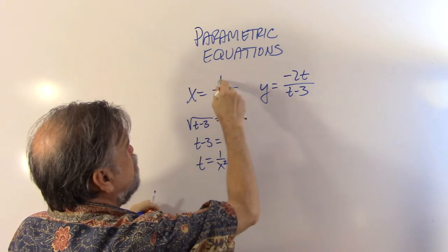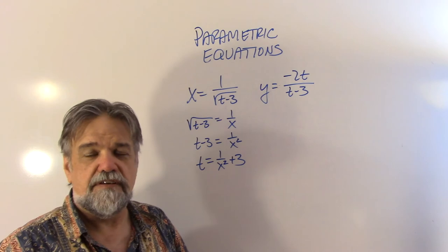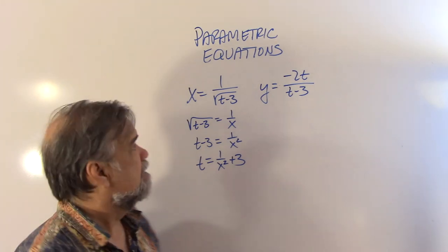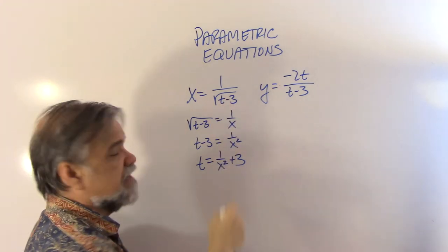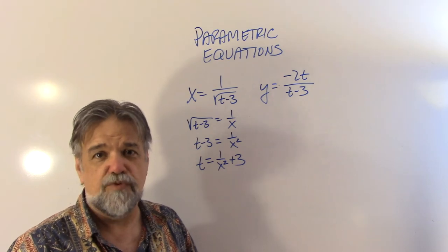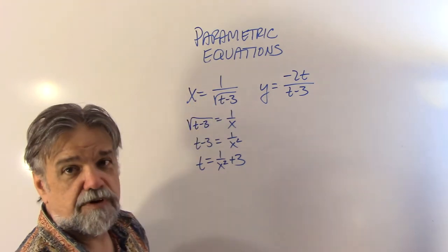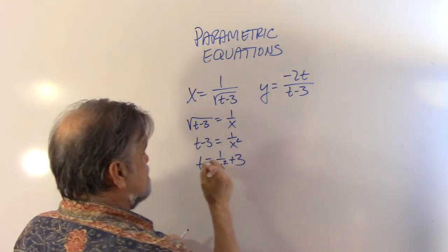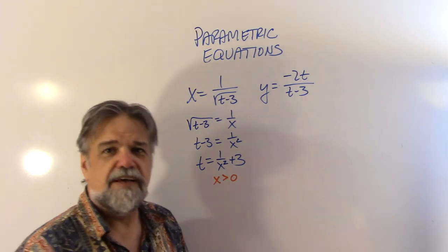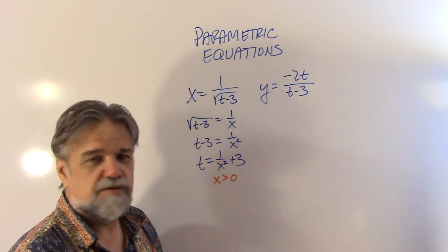Here, I have x equals 1 over the square root of something. Now, the square root of anything is going to get you a positive number. Well, a non-negative number, zero or bigger. And since my square root's actually in the denominator, that means it has to be a positive number. It has to be greater than zero. And 1 over a number greater than zero is also a number greater than zero. So that means x must be bigger than zero. I write that because it's going to be important in just a second.